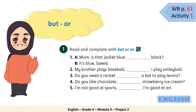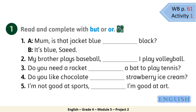Now refer to workbook page 61, Activity 1. We are going to use 'but' and 'or' in sentences correctly. Activity 1: Read and complete with 'but' or 'or'. Number 1A: The person who is asking can't tell what color is the jacket, so we would use 'or'. Let's read: 'Mom, is that jacket blue or black?' Number 1B: 'It's blue, Saeed.' Good job. Now pause the video and complete.